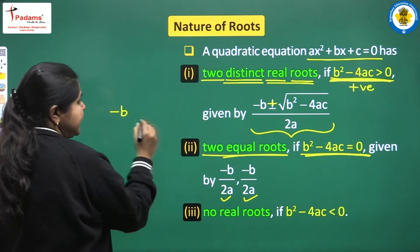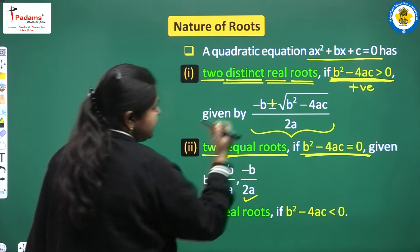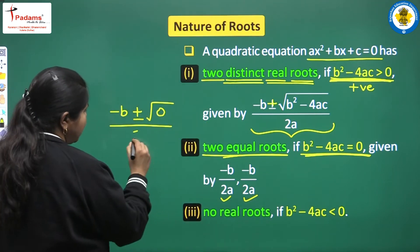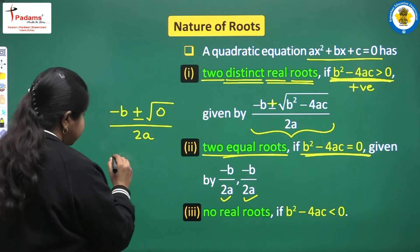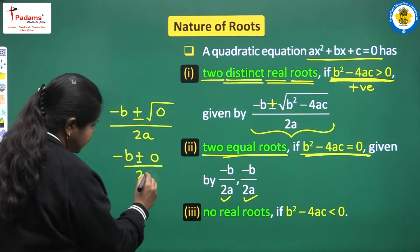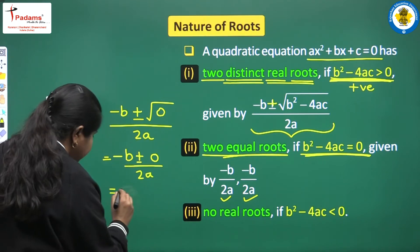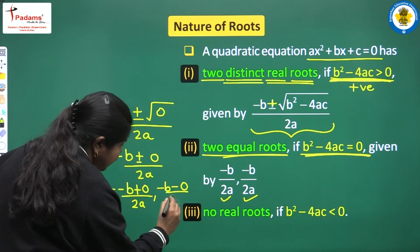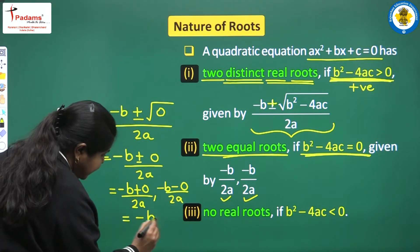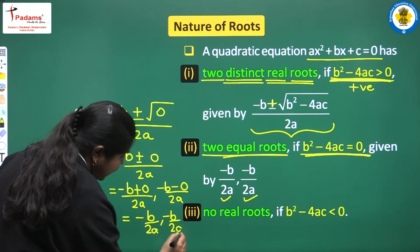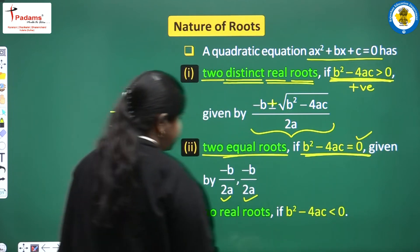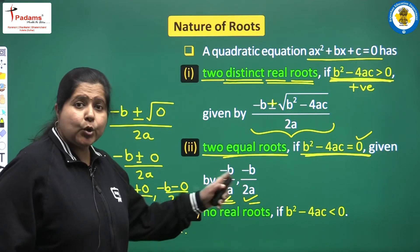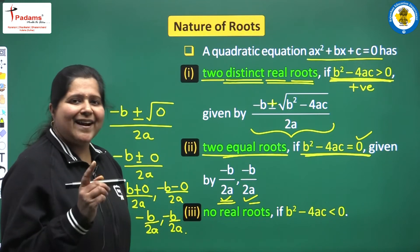If we replace b² minus 4ac with 0 in the formula, the square root of 0 is 0, so we get −b ± 0 upon 2a. This gives us −b/2a and −b/2a — both roots are equal. Jab bhi discriminant ki value 0 hogi, tab dono roots equation ke equal honge aur they are real also.